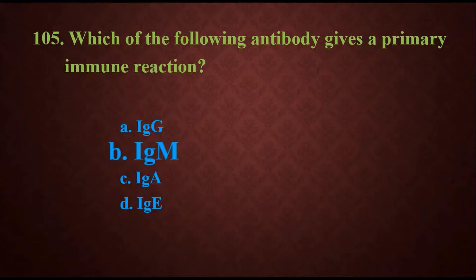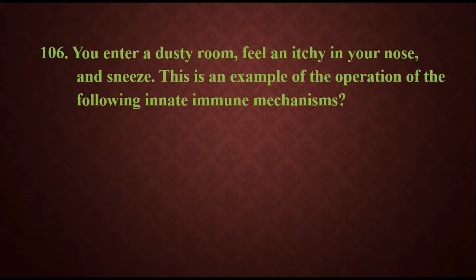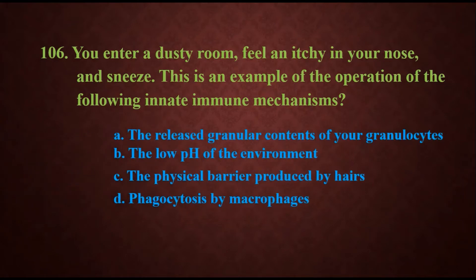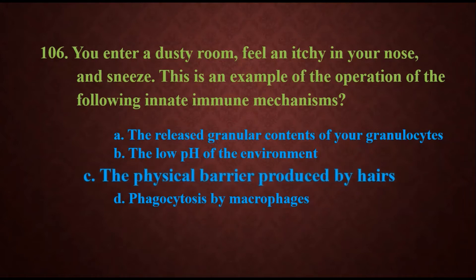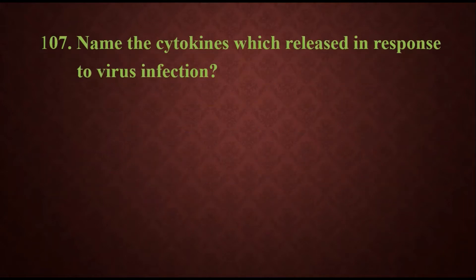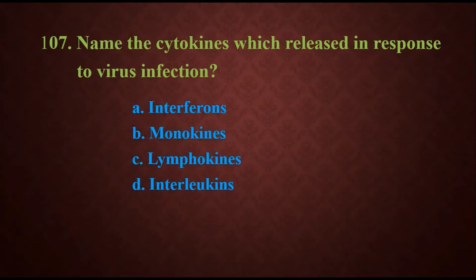Question 106: You enter a dusty room, feel an itch in your nose and sneeze. This is an example of the operation of the following innate immune mechanisms. Options are the released granular contents of your granulocytes, the low pH of the environment, the physical barrier produced by hairs, or phagocytosis by macrophages. The answer is the physical barrier produced by the hair, which provides the innate immune mechanism.